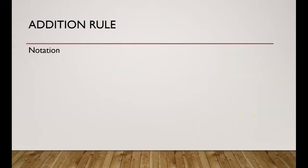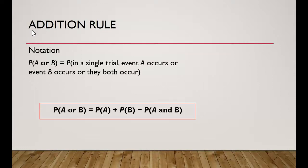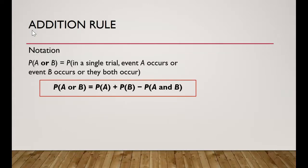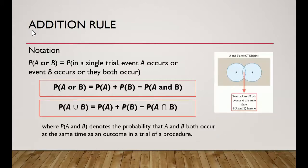We are now ready to learn about the addition rule. The notation for the addition rule is OR. The probability of event A OR B equals the probability that in a single trial, event A occurs, or event B occurs, or they both occur. The formula is: P(A or B) = P(A) + P(B) − P(A and B), subtracting the overlap where both A and B occur at the same time.